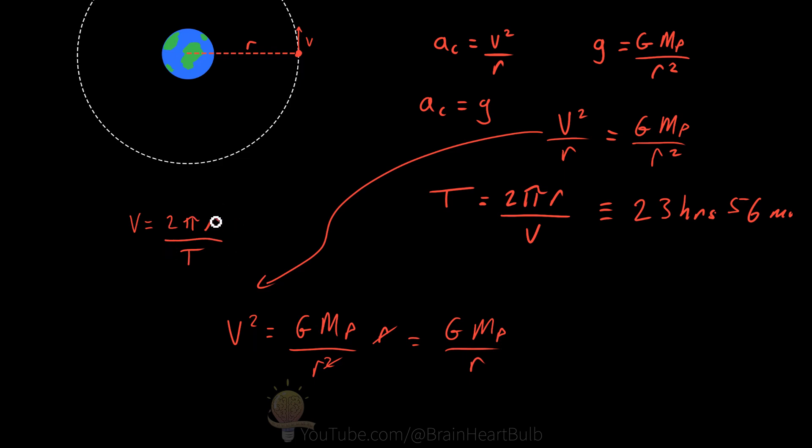And now if we substitute this side of the equation into this v squared here, we get 2 pi r over the period squared. So you can see here that we've eliminated one of the unknowns that we didn't know before. We've still got the radius, which we don't know, but we don't need to work out the velocity anymore.